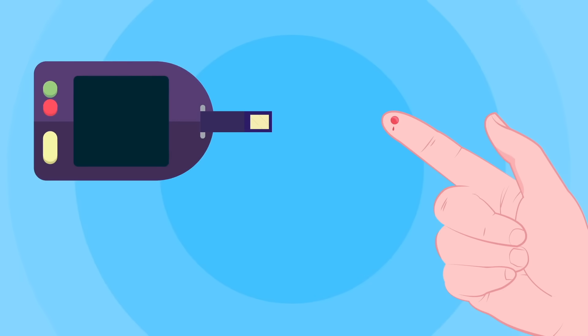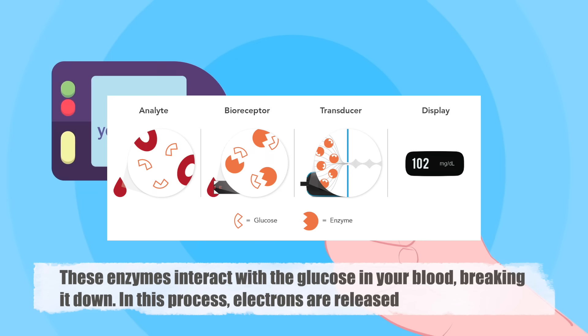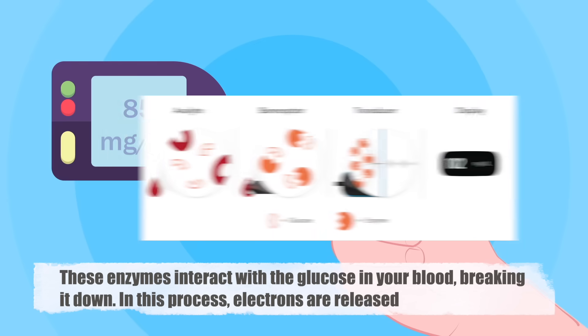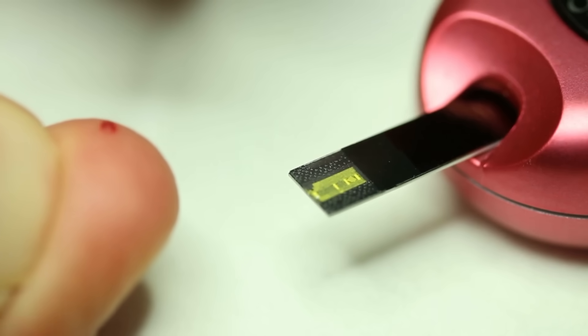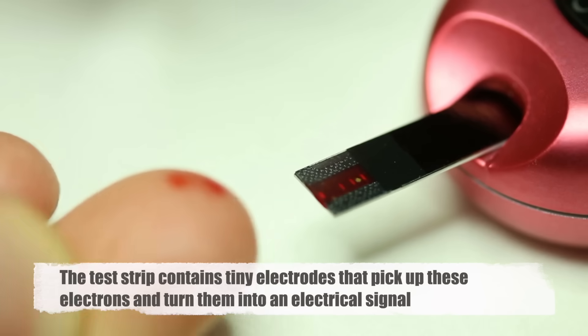When the drop of blood comes into contact with the enzymes on the test strip, a reaction begins. These enzymes interact with the glucose in your blood, breaking it down. In this process, electrons are released. Now, here's where it gets cool. The test strip contains tiny electrodes that pick up these electrons and turn them into an electrical signal.